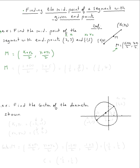So all I got to do is just plug the numbers. x1 is 2 plus x2 is negative 1 divided by 2, y1 is 3 plus y2 is 5 divided by 2.